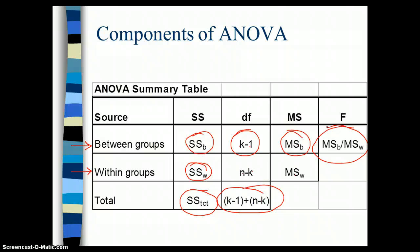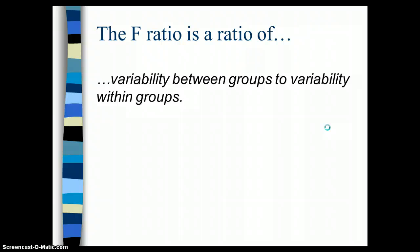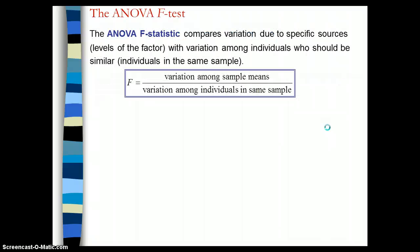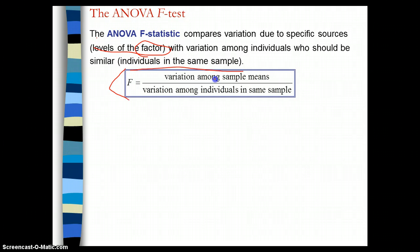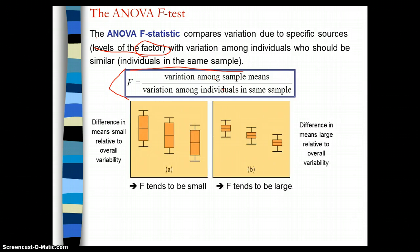It's a pretty straightforward idea — we are looking at between group variation and within group variation, and we're just trying to figure out how that compares. The F ratio is a ratio of variability between groups to variability within groups. Another way to think about it is that the ANOVA F statistic compares variation due to specific sources or levels of the grouping factor with variation among individuals who should be similar — those are the individuals in the same sample. So that variation is a variation among sample means and variation among individuals in the same sample. In example A, the difference in means is small.